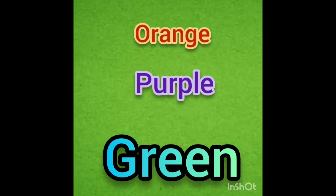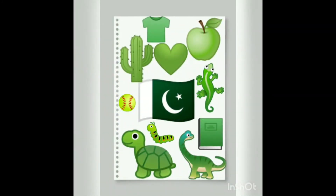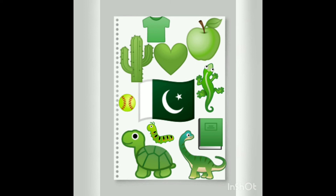Now repeat again. Orange, purple, green are secondary colors. These are secondary colors. Now in green we have our national flag, a dinosaur, a turtle, apple and a lot more.